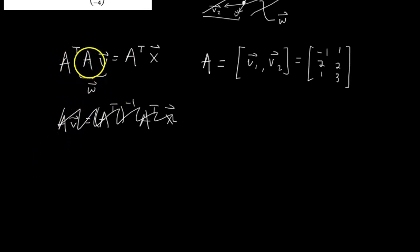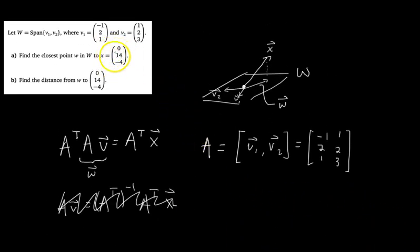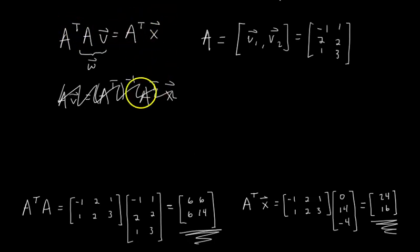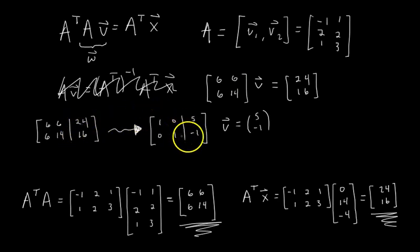First we find A transpose A — that's some matrix — and A transpose X — that's some vector. A transpose A ends up being this matrix, and A transpose X ends up being this vector, where X is the vector we're projecting onto subspace W. We rewrite the matrix equation as A transpose A times v equals A transpose X, write it as an augmented matrix, row reduce to reduced row echelon form, and get our vector v equals 5, negative 1.